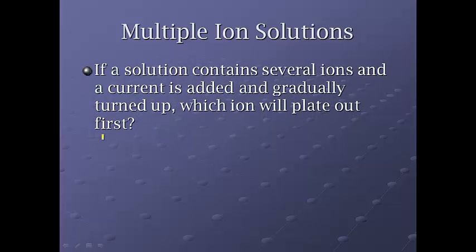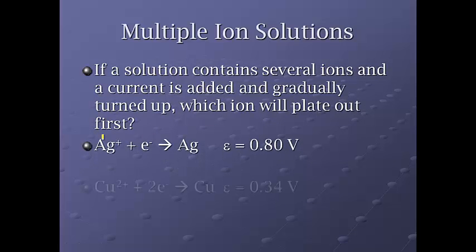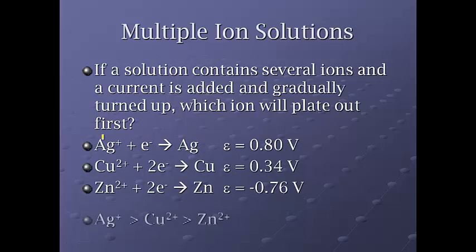Now, if a solution contains several ions and current is added and gradually turned up, we can also figure out which ion will plate out first. So if you're looking at the three of these, you're going to have your silver first, then your copper, and then your zinc, and that's just rating those based on order for voltage.